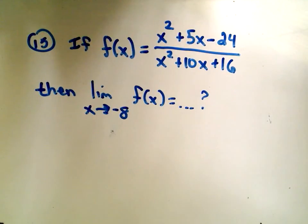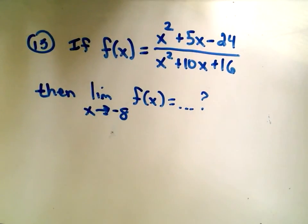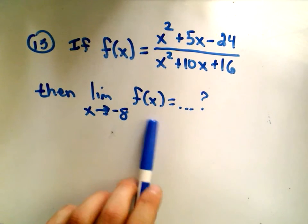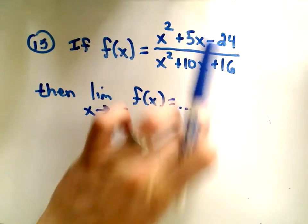In the first one here, the function f(x) is x squared plus 5x minus 24 over x squared plus 10x plus 16. The question asks what the limit as x approaches negative 8 of this function equals.